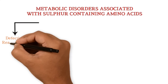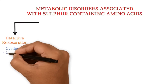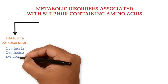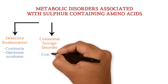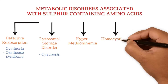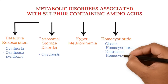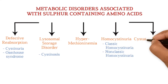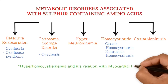The first category is faulty reabsorption, which includes cystinuria and Oast house syndrome. The second condition is cystinosis, a lysosomal storage disorder. The third condition is hypermethioninemia. The fourth is homocysteinuria, which covers both classical and non-classical forms. The final condition is cystathioninuria. We will also discuss hyperhomocysteinemia and its relation with myocardial infarction.